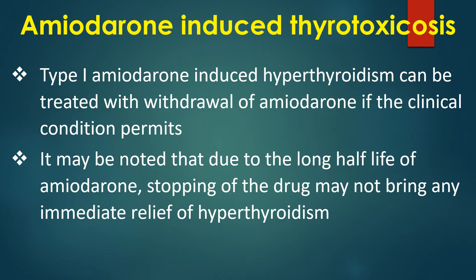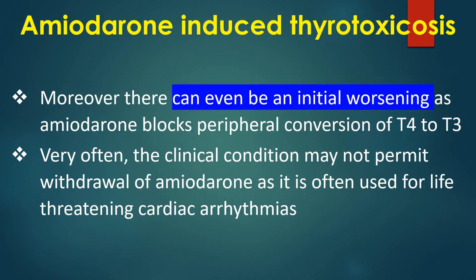Type 1 amiodarone-induced hyperthyroidism can be treated with withdrawal of amiodarone if the clinical condition permits. Due to the long half-life of amiodarone, stopping the drug may not bring immediate relief of hyperthyroidism. Moreover, there can even be initial worsening as amiodarone blocks peripheral conversion of T4 to T3. Very often, the clinical condition may not permit withdrawal as amiodarone is often used for life-threatening cardiac arrhythmias.